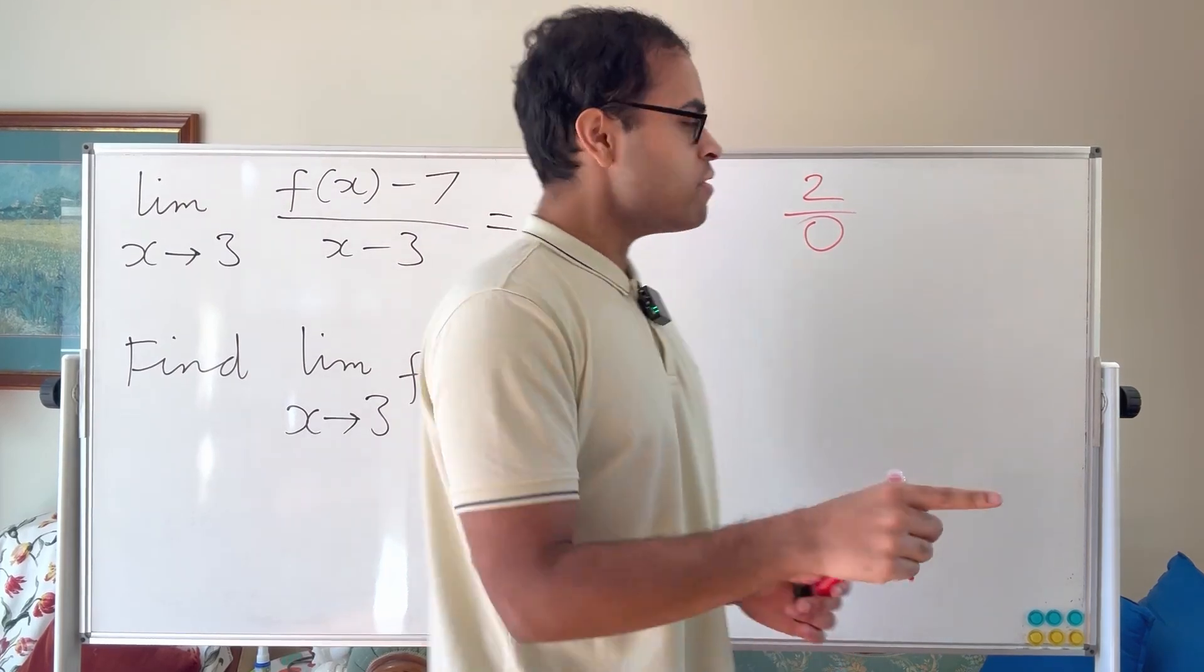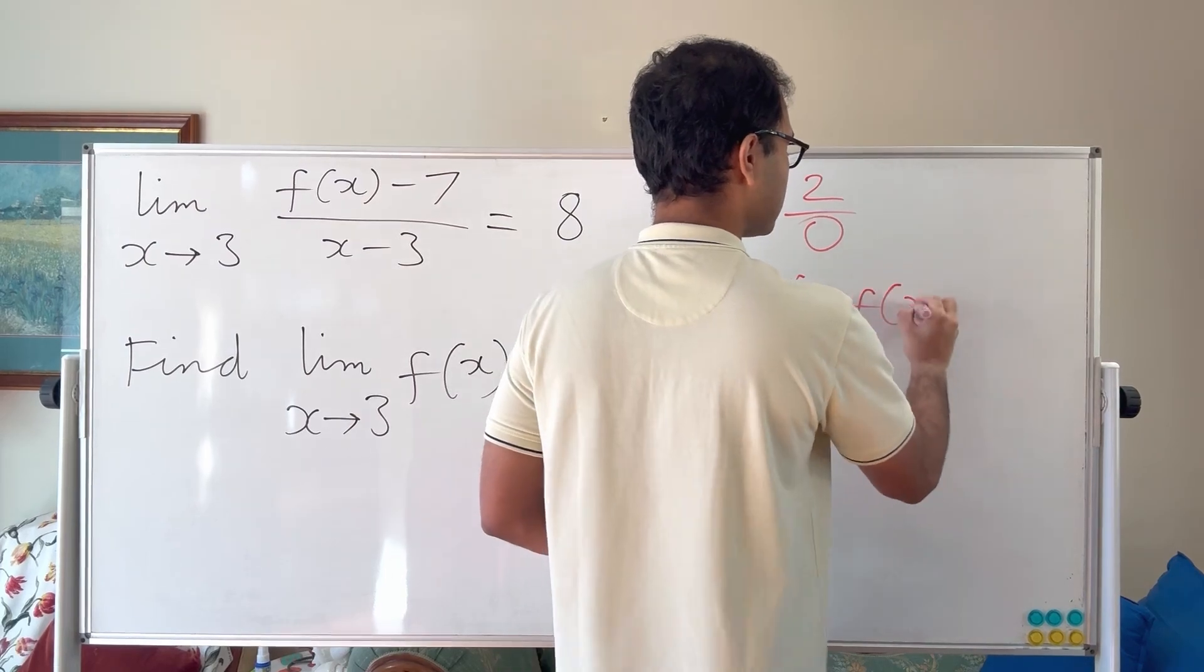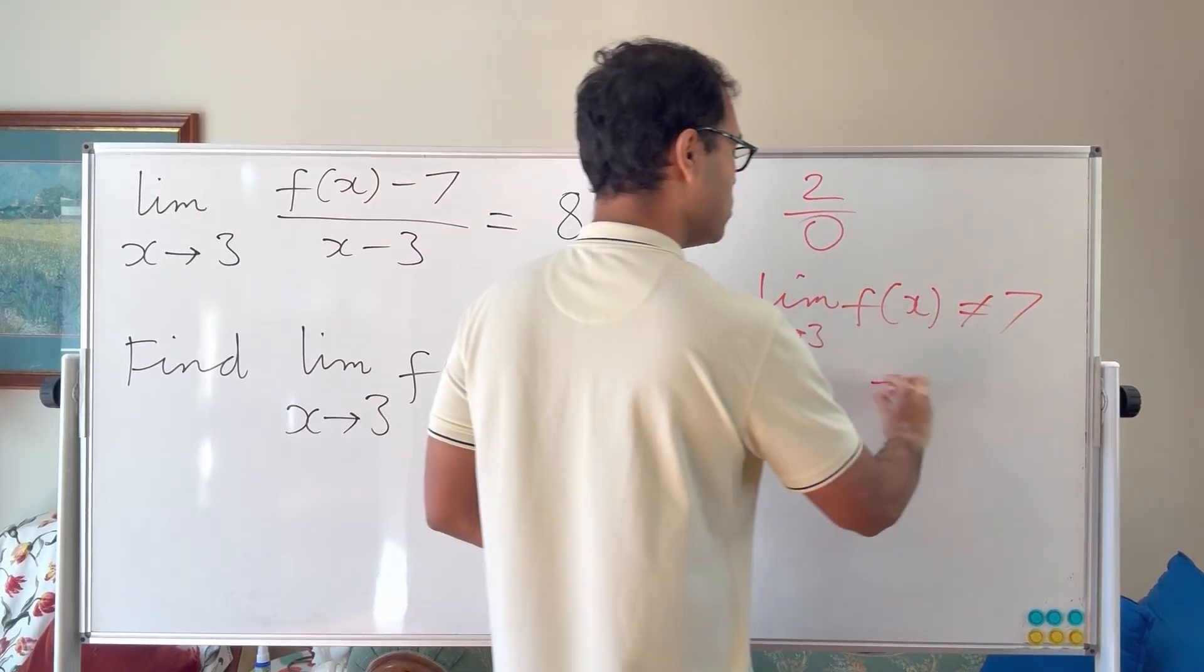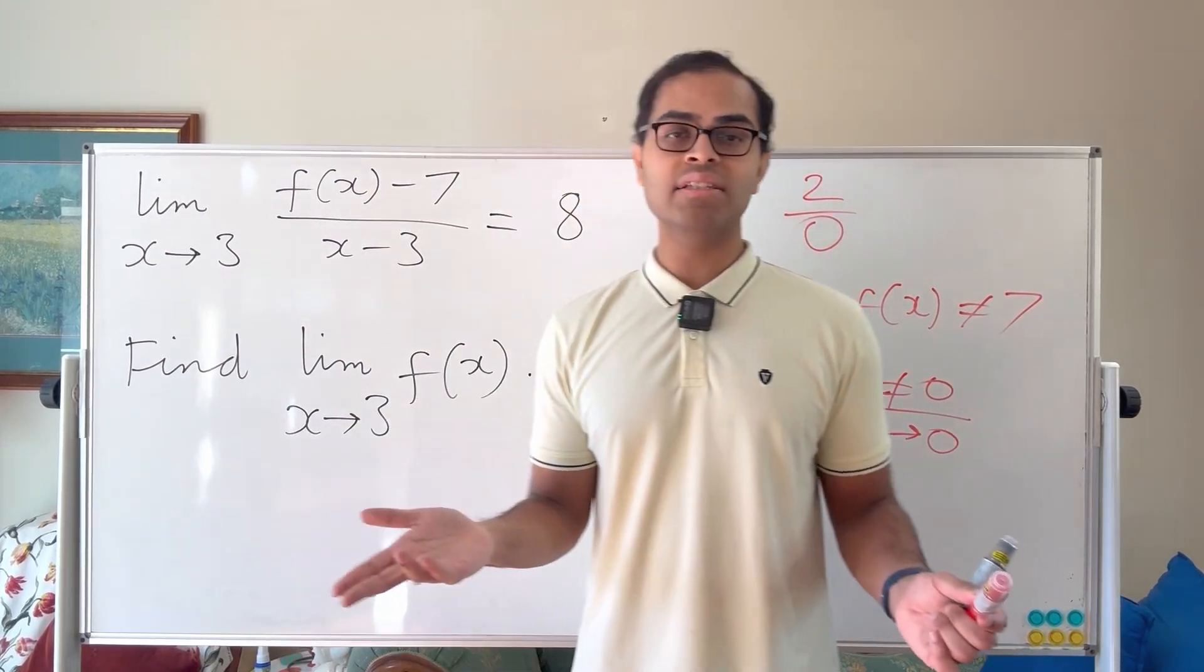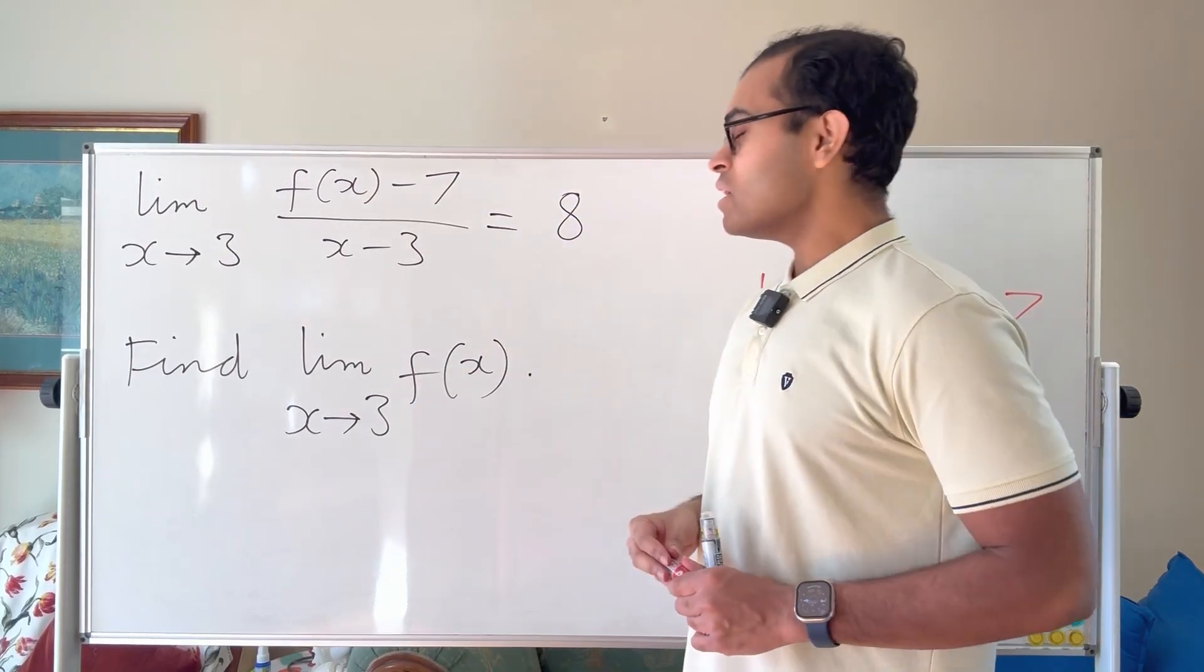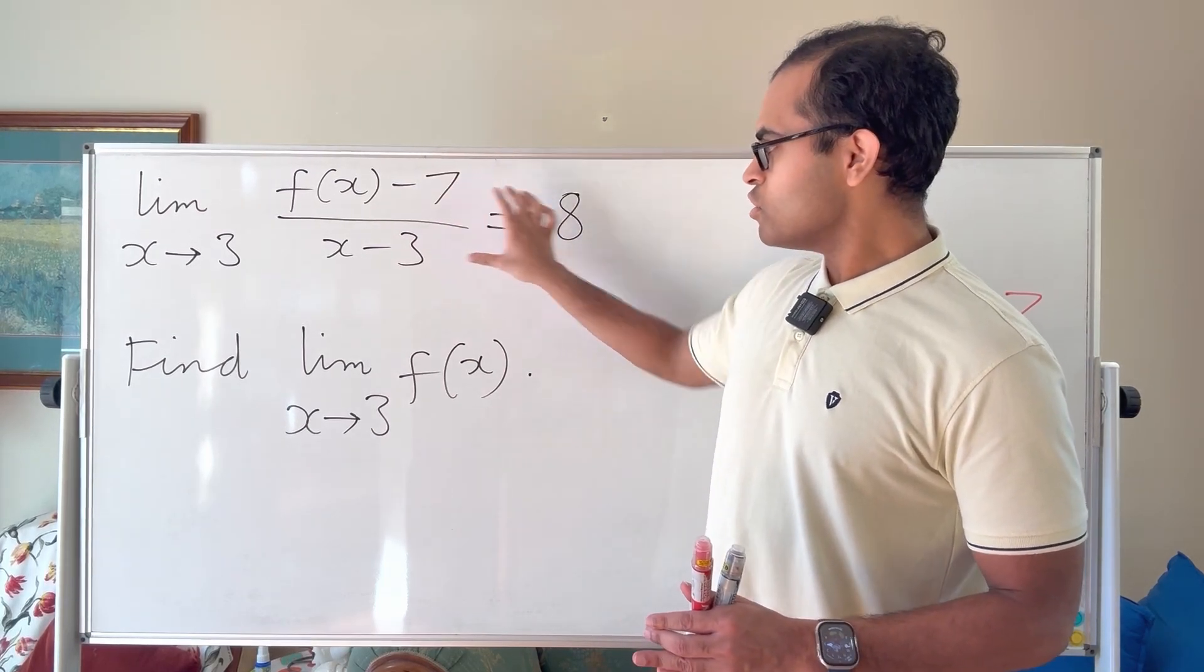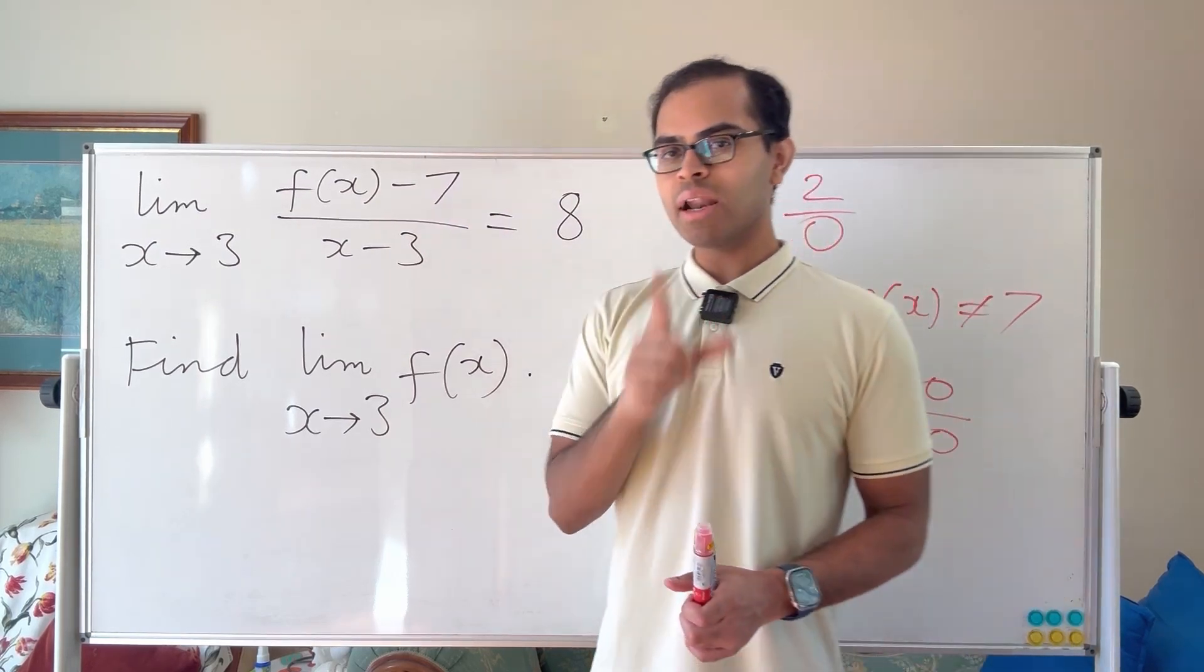It's actually, it could be either plus infinity or negative infinity. It's certainly not going to be 8. So that already gives you some insight into what f of x could possibly approach. Because in fact, if the limit as x approaches 3 of f of x was not equal to 7, so the numerator is not approaching 0, we're going to get something non-zero over something that's approaching 0. And that limit is always going to be either plus infinity or minus infinity. So that's going to be undefined. And so it couldn't suddenly be a finite value.